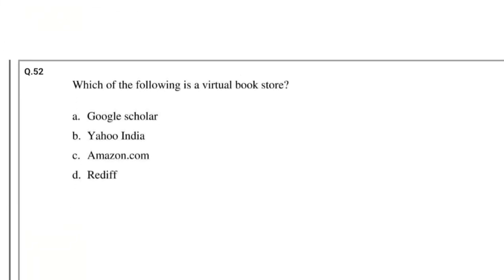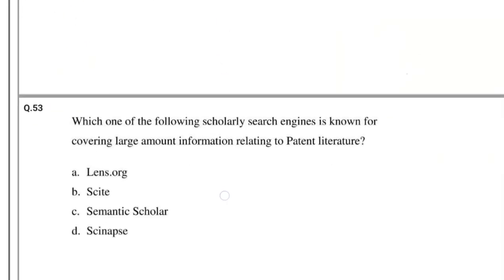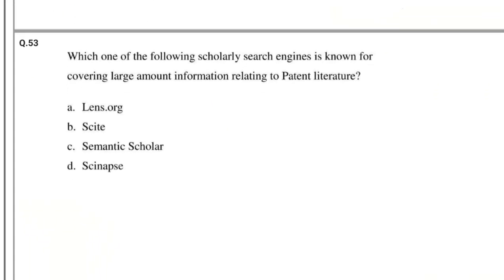Question number 52: Which one of the following scholarly search engines is known for covering a large amount of information related to patent literature? Options: Lens.org, Semantic Scholar, Synapse. The answer is Lens.org.